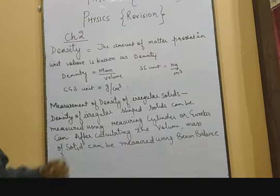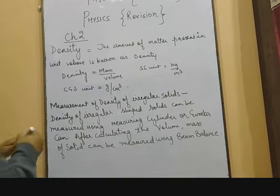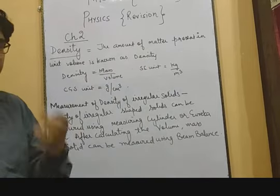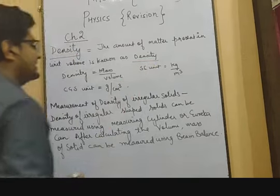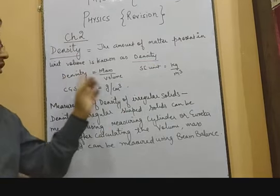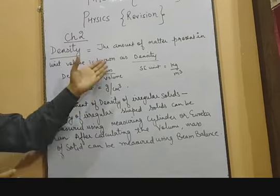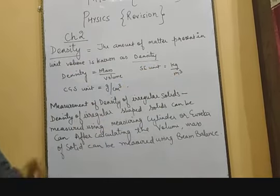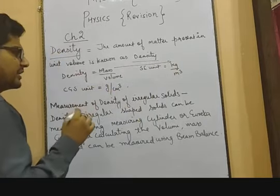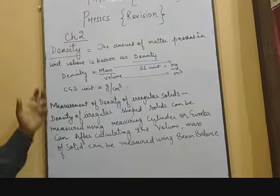The chapter consists of measurement, and measurement of density is generally talked about here. So let us begin with the topic of density. First of all, what is density? Density is the amount of matter present in unit volume — how much mass is present in a fixed volume. The formula to calculate density is mass divided by volume. The standard SI unit for density is kg per meter cube, since mass is measured in kilograms and volume in meter cube.